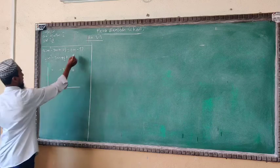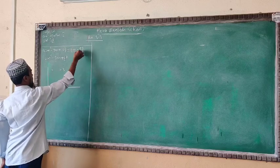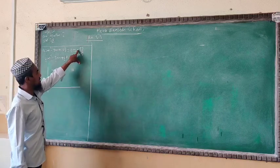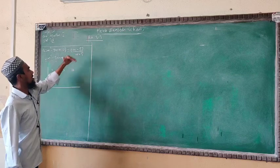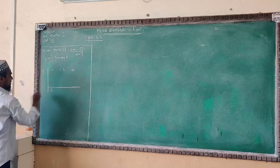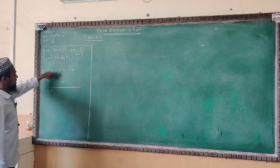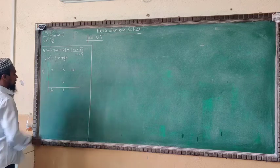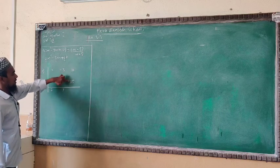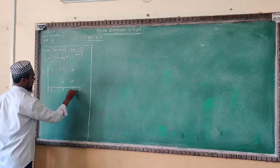For the synthetic division, the divisor is n minus 5. We take the opposite sign, so we use plus 5. Write 5 here and bring down the first coefficient 2 as it is. Now 2 times 5 is 10; bring it down to minus 3, so 10 plus minus 3 gives 7. Now multiply: 7 times 5 is 35. Then 10 plus 35 gives 45.